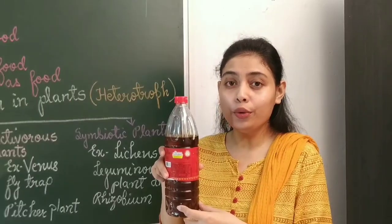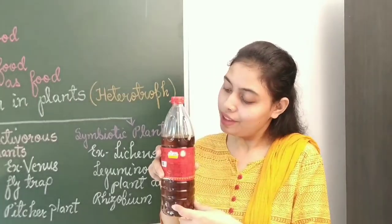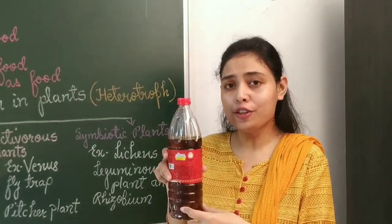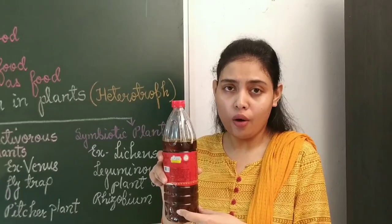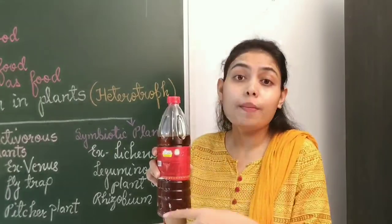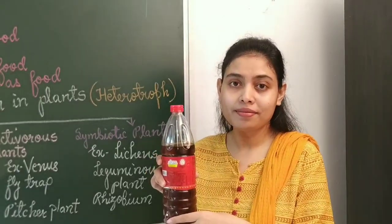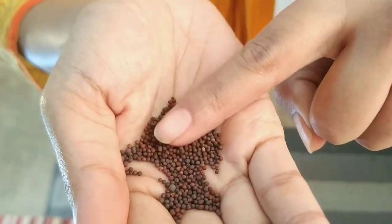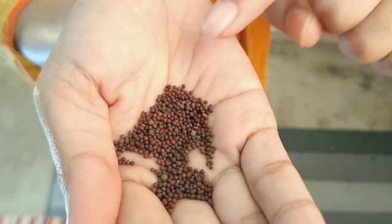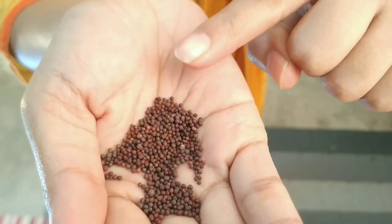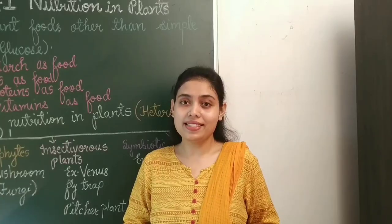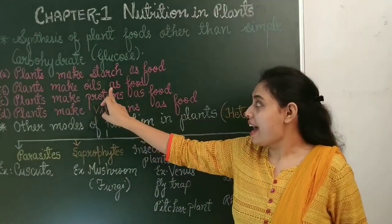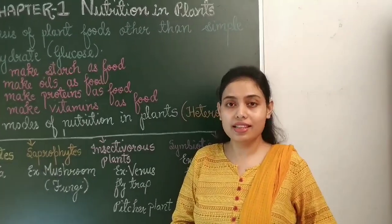Do you know what this is? It's a bottle of mustard oil. We use mustard oil for cooking. From where does mustard oil come? Mustard oil is extracted from mustard seeds. Hence, we can say that plants make oils as food and store them in the seeds.